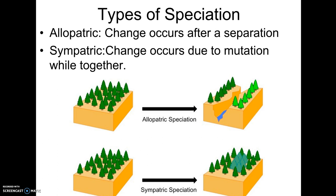These are two vocabulary words that have to do with how speciation happens. Allopatric speciation is when organisms become separate species during a time that they are separated. For example, an earthquake comes through and separates two groups of trees. Over time, due to natural selection, genetic drift, mutations, they eventually become separate species. Even if they come back in contact, they're no longer able to breed — they would be separate species. This is called allopatric speciation because it happened during a time when they were geographically isolated from each other.